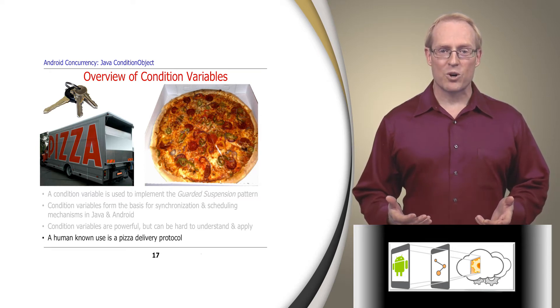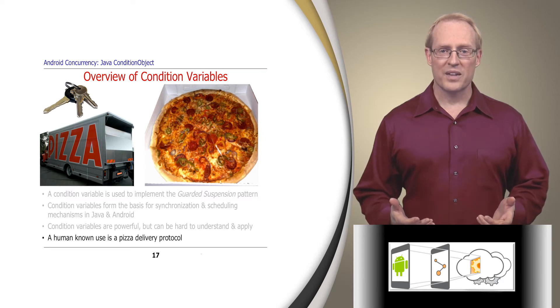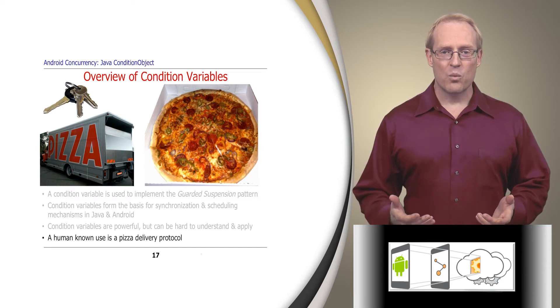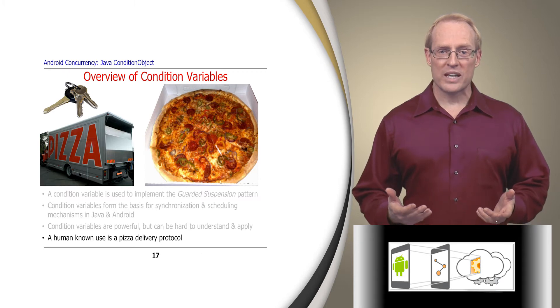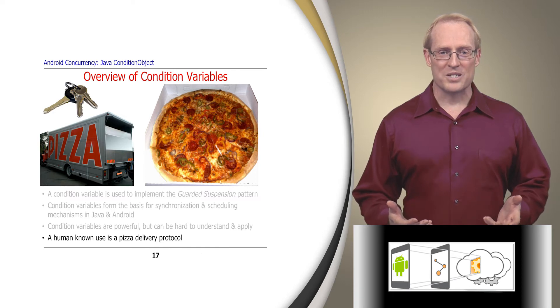When cooks finish a pizza, they ring a bell. Likewise, when someone returns from delivering a pizza, they put the keys on a hook and ring a bell. These bells notify all sleepers that conditions have changed. They then wake up and try to get both the pizza and the keys, which must be acquired in the same order to avoid deadlock. If someone only gets one resource, they must release it and go back to sleep until they're reawakened the next time a bell rings. This whimsical example shows how condition variables can be used to wait for various conditions to become true and coordinate the activities of multiple interdependent entities.